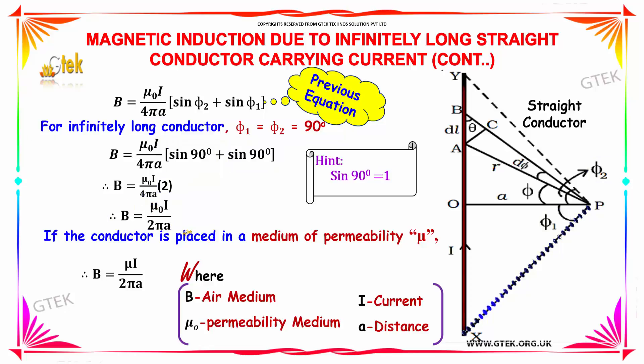If the conductor is placed in a medium of permeability mu, it will become mu into I by 2pi a. Where B is the air medium, mu is the permeability of medium, I is the current, and a is the distance.